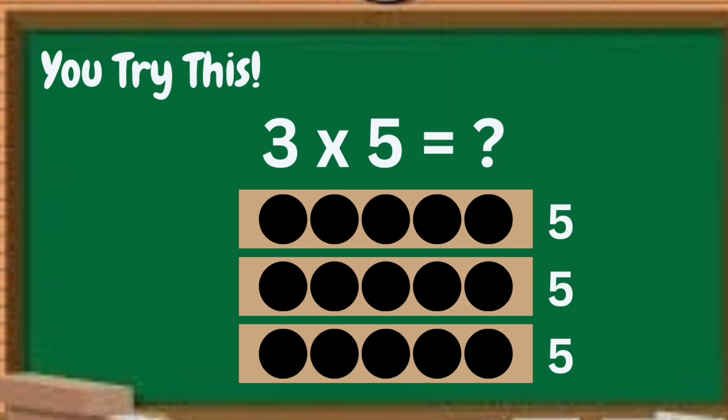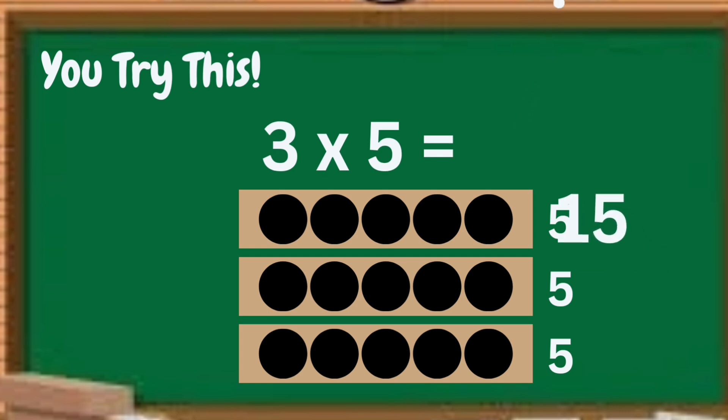Time's up, children! Let's answer this problem. 3 times 5 equals... let's see! We have 3 rectangles, and in every rectangle there are 5 black dots. Now, we are going to add all of those black dots to get the product of 3 times 5. 5 plus 5 is 10, and 10 plus 5 is 15. Very good, children!